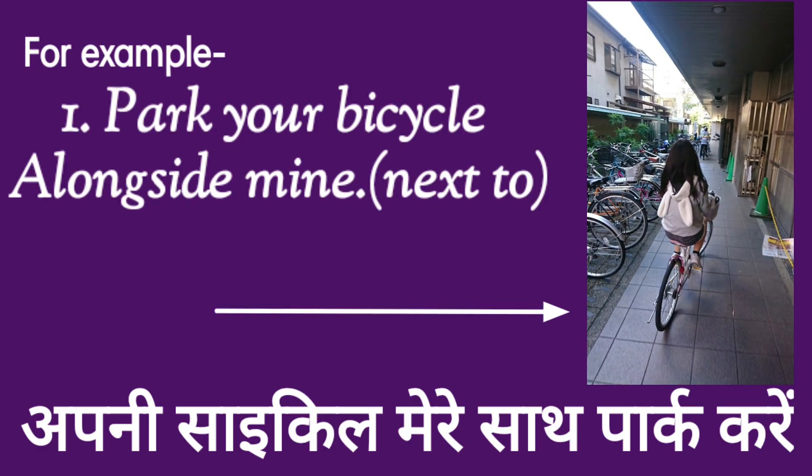Now let us understand with the help of examples. 'Park your bicycle alongside mine.' अपनी साइकल मेरे साथ पार्क करें। Now look into this picture — साइकल पार्क करनी है मेरे बगल में। Alongside mine मतलब next to me। Alongside इस sentence में क्या है? Preposition। किस से follow हो रहा है? Mine से। And what is mine? Mine is a pronoun.